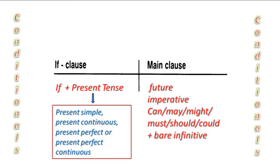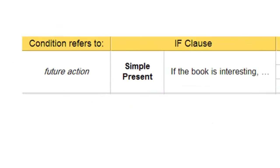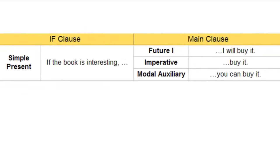If I am talking about a future action, I use the simple present in the if-clause. And I can use in the main clause future simple or imperative or modal auxiliary. If the book is interesting, I will buy it, or buy it, or you can buy it.